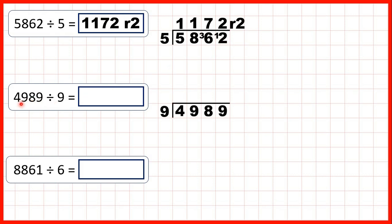So now we have 4,989 divided by 9. If we look at the first digit, we have a 4, but 4 is less than 9. So when this happens, either we can write 0 and a remainder of 4 in front of the next digit, or we can just take the first two digits together and divide 49 by 9. The closest number to 49 in the 9 times table that's still less than 49 is 45, and because 45 is 5 times 9, we write 5 in our answer line. But 5 times 9 is 45 and we need 4 more to get to 49, so our remainder is 4, and we can write that in front of the next digit.